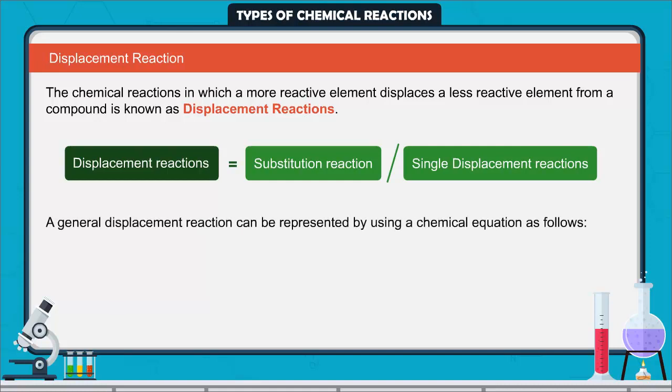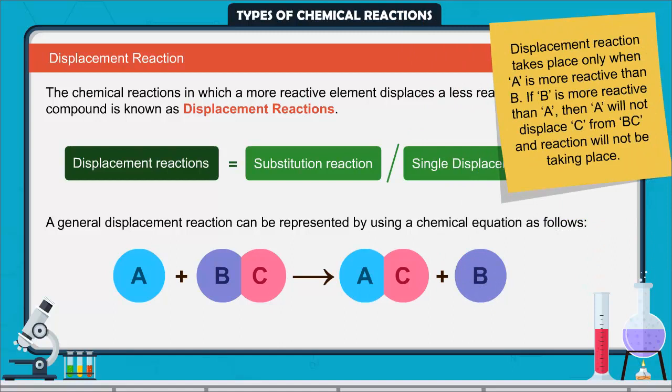A general displacement reaction can be represented as follows: A plus BC converted to AC plus B. Displacement reaction takes place only when A is more reactive than B. If B is more reactive than A, then A will not displace C from BC and reaction will not be taking place.